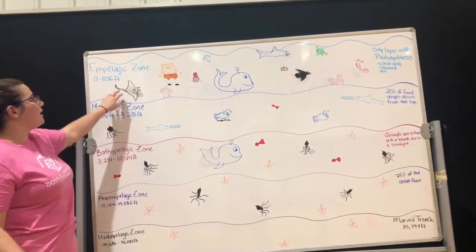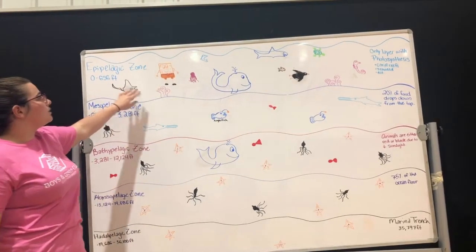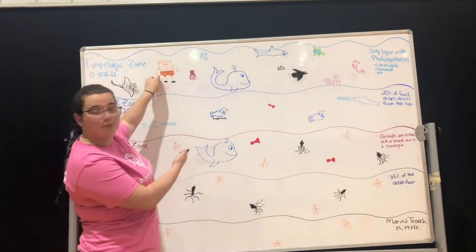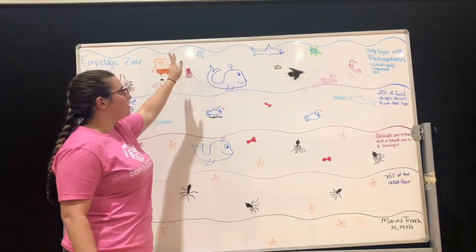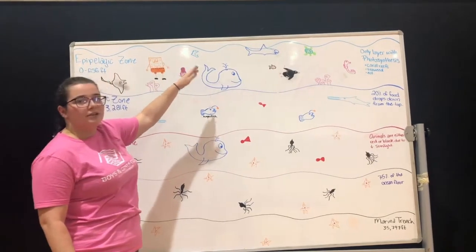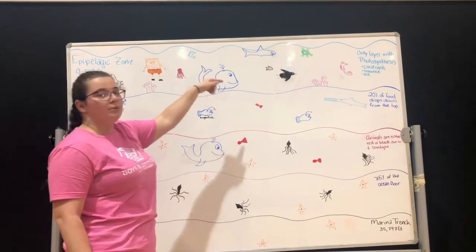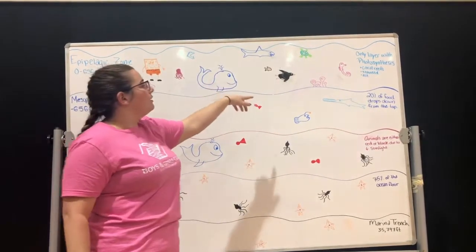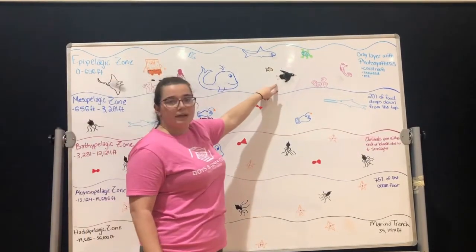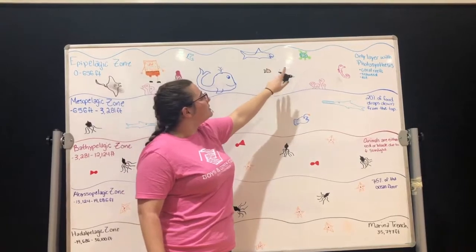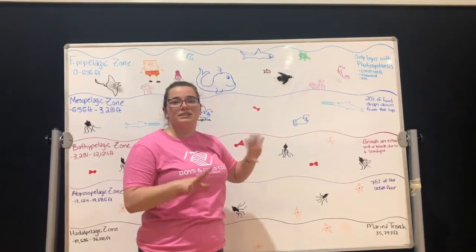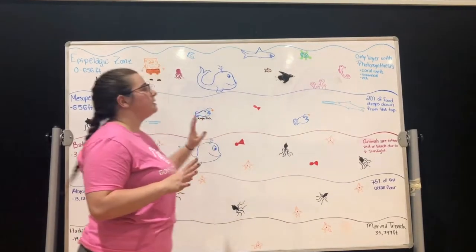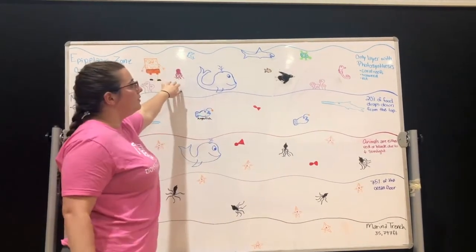So you're gonna have your stingrays, coral — this is where SpongeBob would live. We have jellyfish and dolphins, whales, sharks, Nemo, penguins, sea turtles and seahorses, and that's basically all gonna be up here.